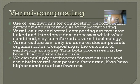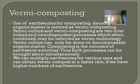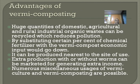Use of earthworms for composting decomposable organic matter is termed as vermicomposting. Vermiculture and vermicomposting are two interlinked and interdependent processes which, when combined, may be referred to as vermi-technology. Vermiculture can only be done on decomposable organic matter; composting is the outcome of earthworm activities, so both processes can be brought about simultaneously. We can multiply earthworms for various uses and obtain vermicompost at a faster rate if we have a higher number of earthworms.